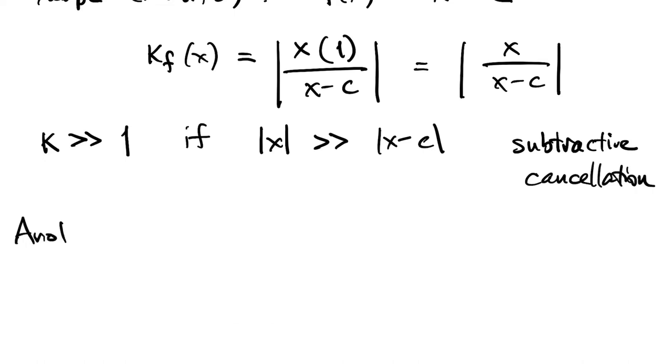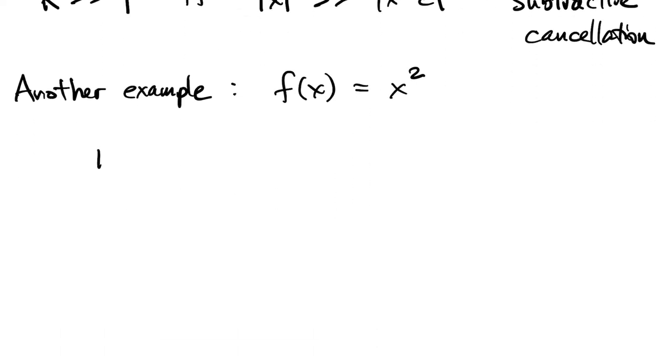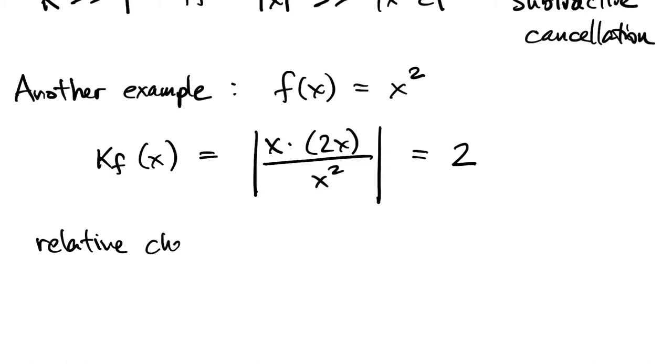Here's a new example. Let's look at the problem of squaring a number. So if f of x equals x squared, we plug that into the formula for the condition number, and we get the result 2. So that tells us the relative change in the answer is twice the relative change to the data. Maybe that doesn't sound good, but when you're talking about a relative change that's as small as 10 to the minus 16 to begin with, we can handle a factor of 2. That's considered very well conditioned.